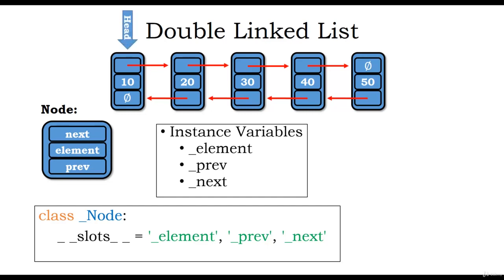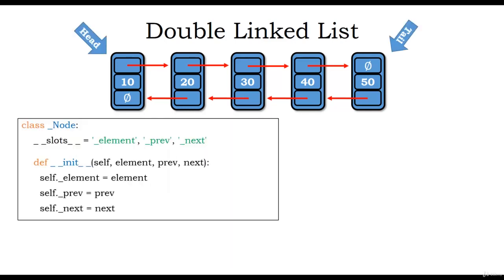We will also have a head and tail, where head points to the first node and tail points to the last node. The init method assigns element to the instance variable _element, previous to _prev, and next to _next. Note the difference from a singly linked list node, which has only two instance variables (element and next), whereas the doubly linked list node has three.